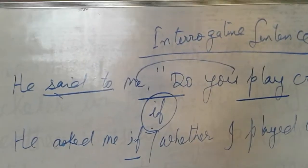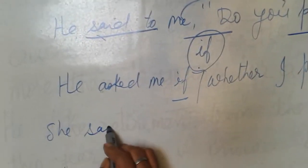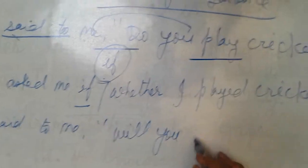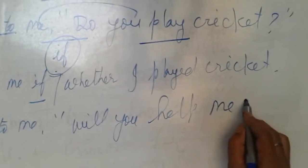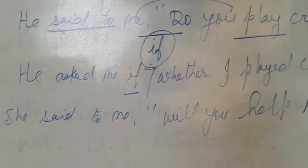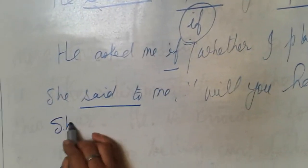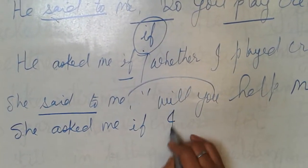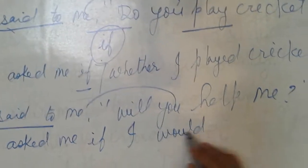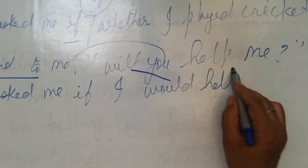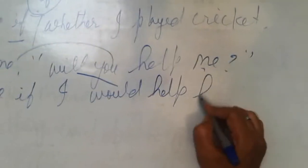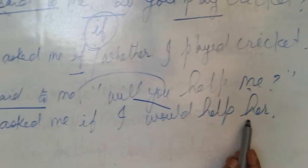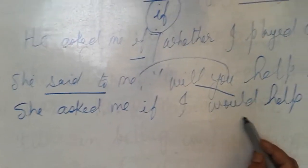That is another sentence. She said to me, 'Will you help me?' You write: she asked me if I would help her. 'Will' changes into 'would', and 'me' changes according to 'she', so it becomes 'her'. In indirect narration, the sentence should be simple: she asked me if I would help her.